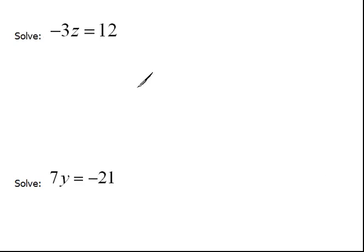In our next problem, we have negative 3 times z is equal to 12. Well, our goal here is still get the variable alone. We want to know, what does z equal? Right now, z is being multiplied by negative 3. So the opposite of that would be to divide by negative 3. If I do it to the left side, I also have to do it to the right side.